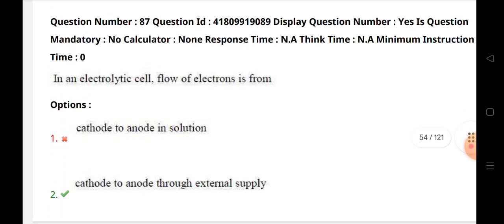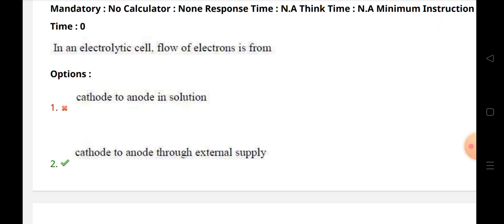In an electrolytic cell, the flow of electrons is from cathode to anode through external supply.